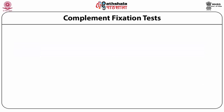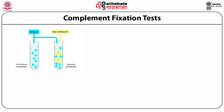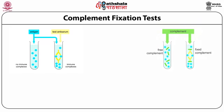Let us see how the complement fixation test detects antibodies. In the first step, a test antiserum is titrated in doubling dilutions and a fixed amount of antigen is added to each well or tube. If antibody is present in the test serum, immune complexes will form. In the second step, complement is then added to the mixture. If complexes are present, they will fix complement and consume it.